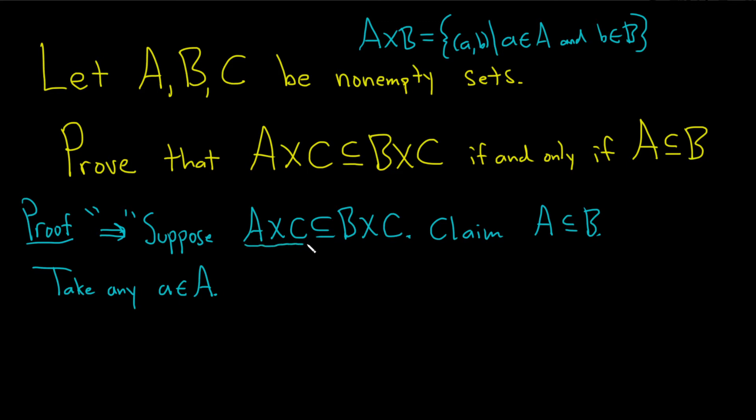So we somehow have to use this. So it would be nice to use it and to use it we need to come up with an ordered pair. This is where the non-emptiness comes into play. So we can create a C.